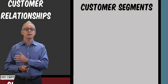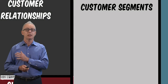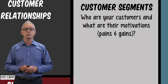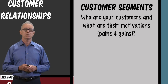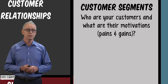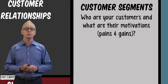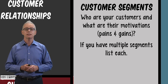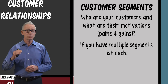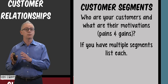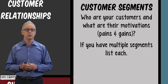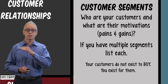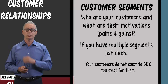Next, we move to the right side of the canvas and building block two: customer segments. This is where we identify the specific and unique customer roles or segments that we hope to be able to sell our value proposition to. If you have multiple customer segments, you should list each of them in the customer segments block of your canvas.